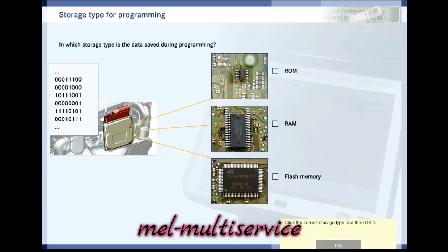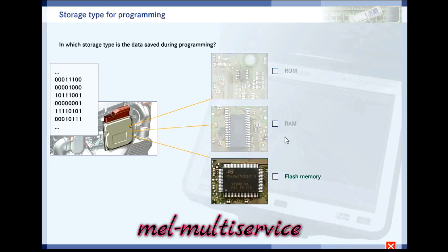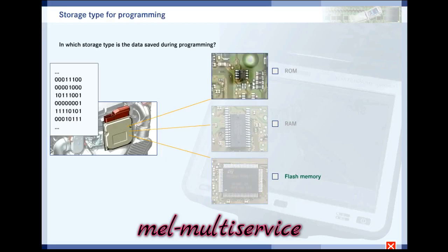Programming is only possible if the program and initial data are stored in a flash memory. That's why programming is also known as flashing. Control units which contain the program and initial data in the ROM cannot be programmed, because the content of the ROM cannot be changed. Although it would be possible to store the data in the RAM, it would be useless, since the data would be lost as soon as the power is switched off.